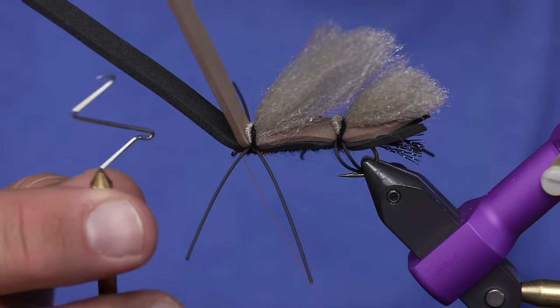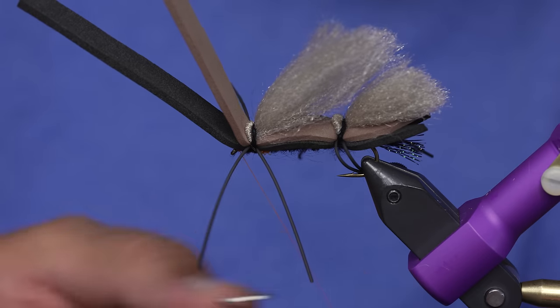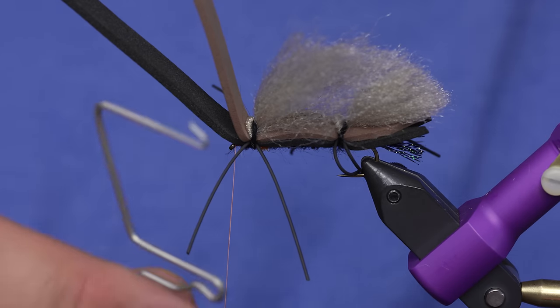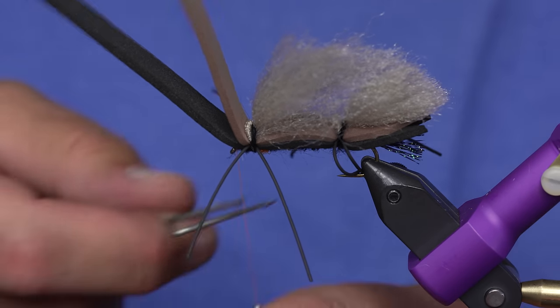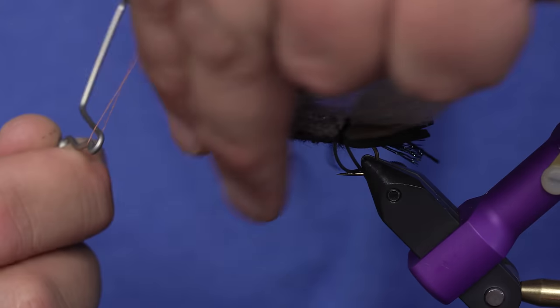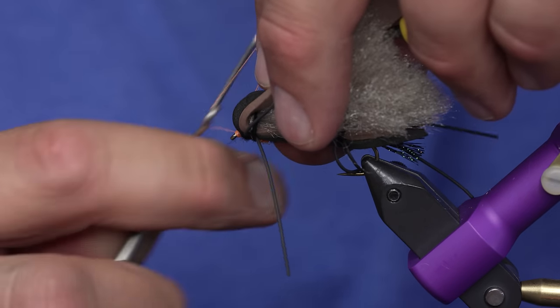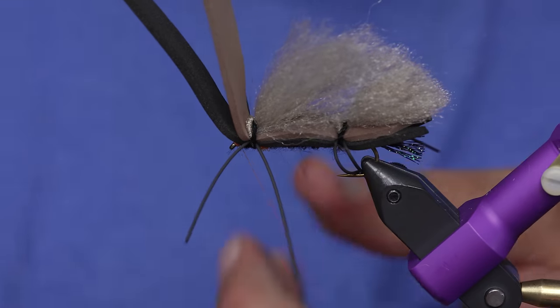From here, somebody gave me the midge whip finisher for this giant fly, so wish me luck. Brigham told me that this one was there. Boom, see that Brigham?